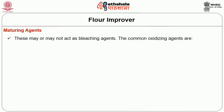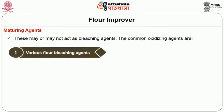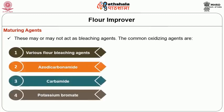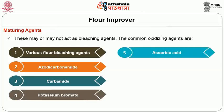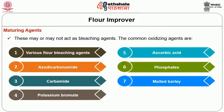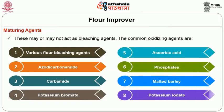These maturing agents may or may not act as bleaching agents. The common oxidizing agents are various flour bleaching agents, azodicarbonamide, carbamide, potassium bromide, ascorbic acid, phosphates, malted barley, and potassium iodate.